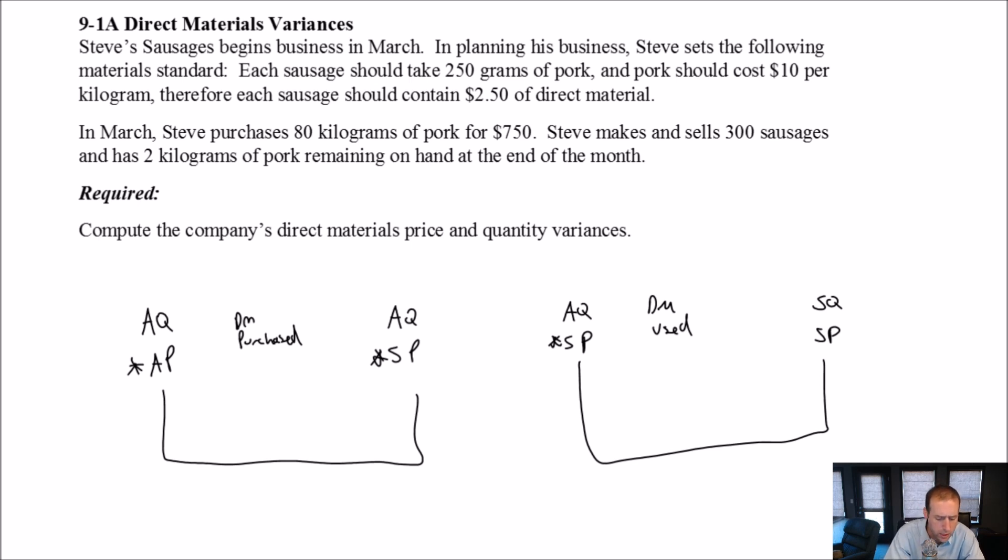So the question reads, Steve's Sausages begins business in March. In planning his business, Steve sets out the following materials standards. Each sausage should take 250 grams of pork, and pork should cost $10 per kilogram. And for the non-metric crowd, 250 grams is 0.25 kilograms. So if pork costs $10 a kilogram, that means each sausage has 250 grams of pork, 10 times 0.25 tells us that yes, indeed, each sausage contains $2.50 of pork, direct material going into our sausage.